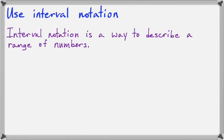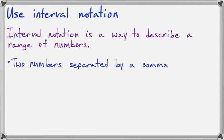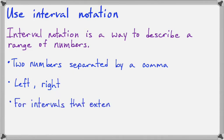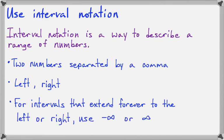Interval notation is just a way to describe a range of numbers. There will be two numbers separated by a comma in either brackets or parentheses, possibly both, and we always give the left number first and then the right number. For intervals that extend forever to the left or right, we use negative infinity or positive infinity. The infinity symbol looks like a sideways 8, and the left end of the line is negative infinity and the right end is positive infinity.